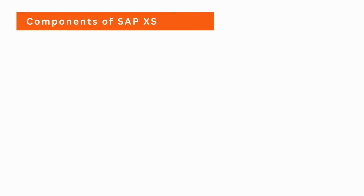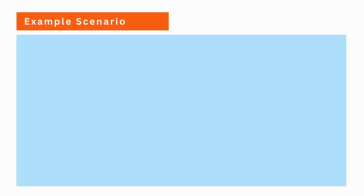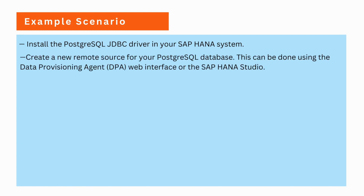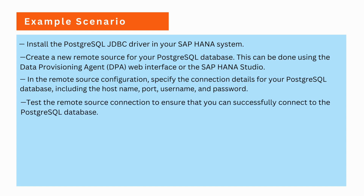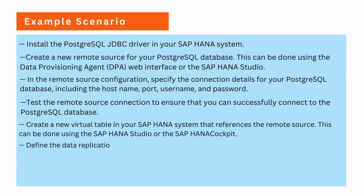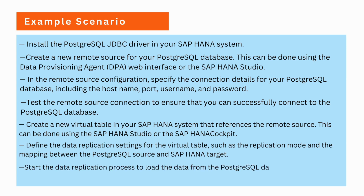For a better understanding, let's take an example of how we can integrate PostgreSQL into SAP HANA. We need to first install the PostgreSQL JDBC driver in your SAP HANA system. In the second step, we need to create a remote source for your PostgreSQL database. Once the connection is successful, we can create a virtual table in your HANA system. Then we have to define the data replication settings of the virtual table, and finally start the data replication process to replicate the data from PostgreSQL to your HANA system.